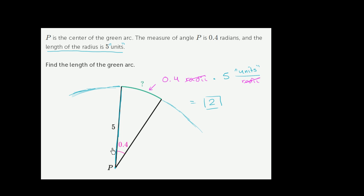So just as a refresher again, when the angle measure is in radians, one way to think about it is the arc that it intercepts is going to be that many radii long. Well, if each radius is five units, it's going to be 0.4 times five units long, or two.